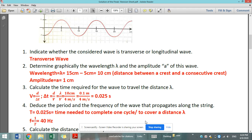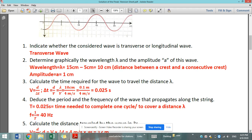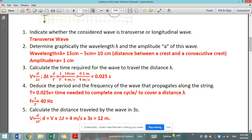0.025 seconds because it's the time you need to complete one cycle or to cover a distance lambda. And the frequency is 1 over the period. Having the period in the SI unit, which is seconds, we get the frequency in hertz.